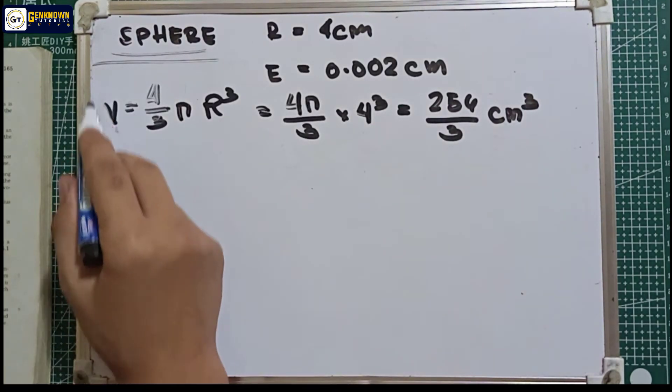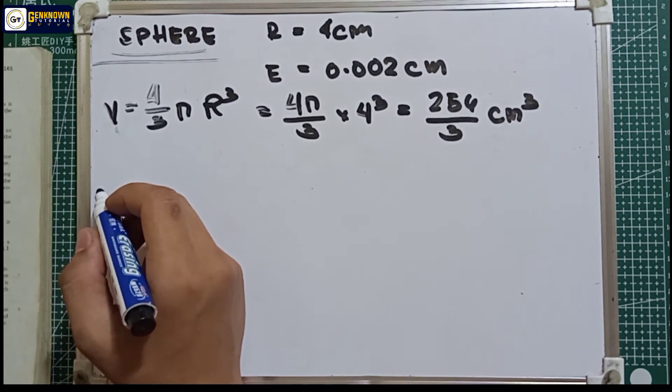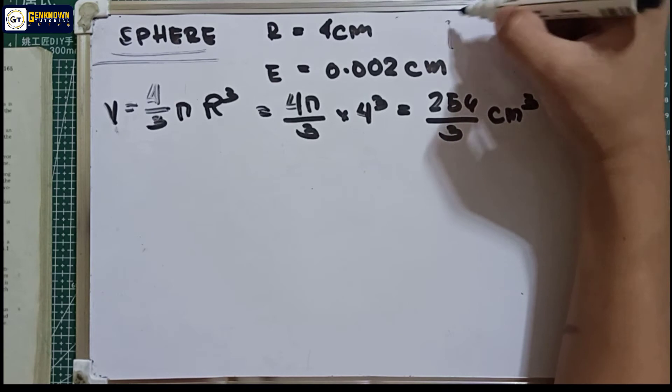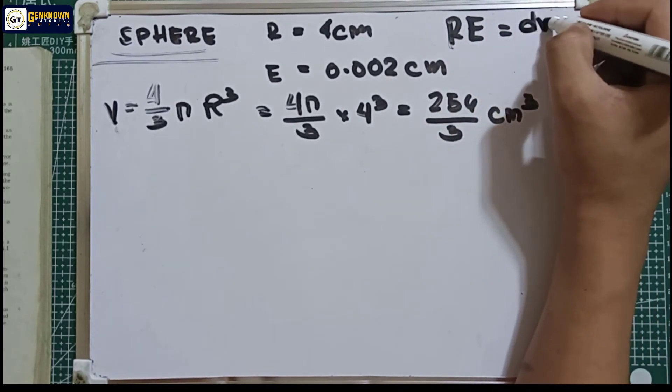Now let's differentiate our volume to find the value of dv. By the way, the formula for RE is equal to dv over v.